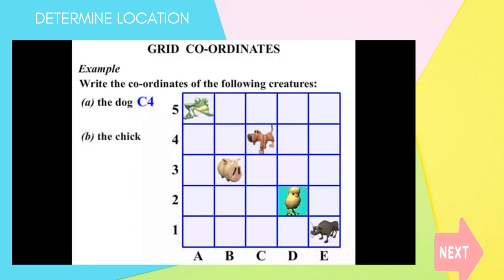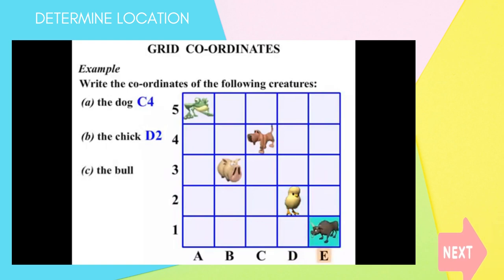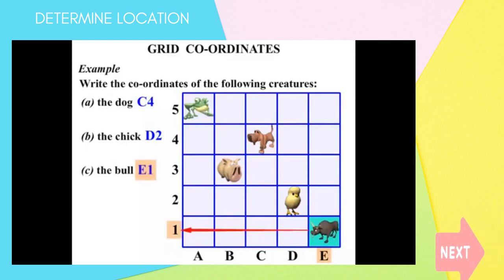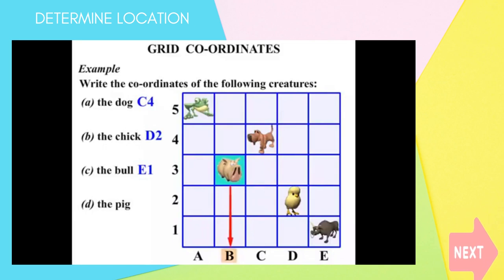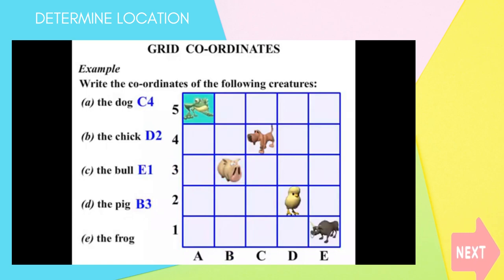The pig is in column B and row 3. We write B3. The frog is in column A and row 5. We write A5.